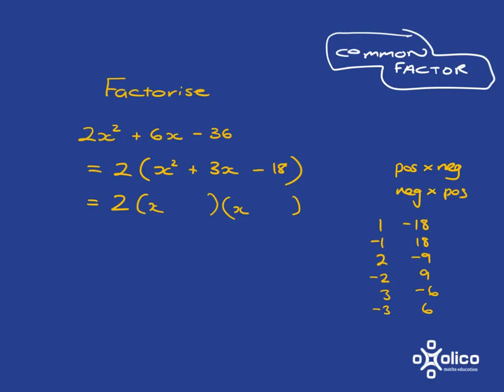And we've got to look which of these are going to add together to give me 3. Well, if I look down here, 3 and add -6 is going to give you -3. But -3 plus 6 is going to give you positive 3.